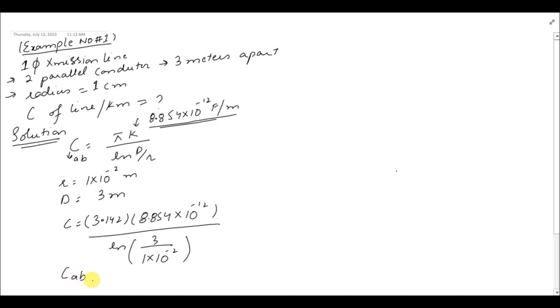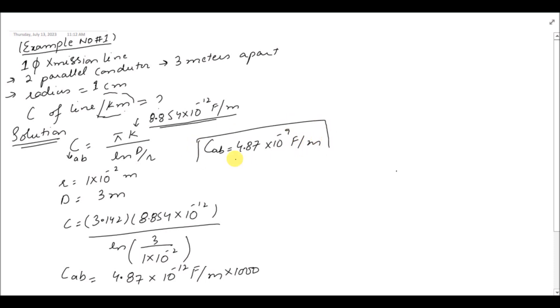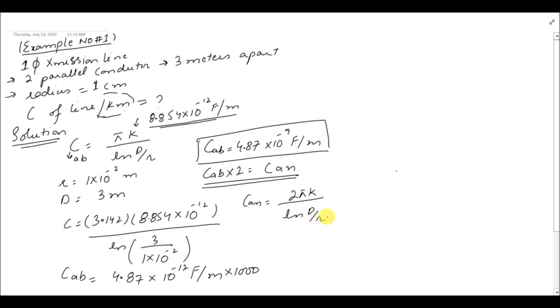The final value of line-to-line capacitance is 4.87 × 10⁻⁹ farad per meter. Now if you are asked to find the line-to-neutral capacitance, you just multiply it by 2, because the formula of line-to-neutral capacitance is 2πk / ln(d/r).